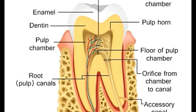Cementum: Cementum is a thin calcified covering of the root of the tooth. It is divided into primary and secondary cementum. While the former coats the entire length of the root, only the latter continues to form around the apex or apical half of the tooth root after the tooth has erupted completely. It is not as hard as enamel or dentin, but it is harder than bone. It doesn't have a blood supply and has the highest fluoride content.